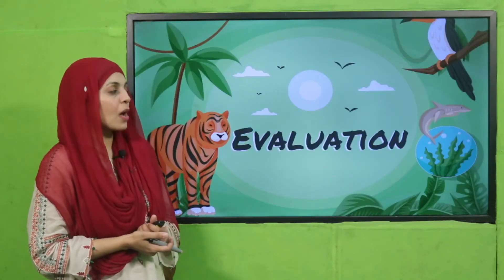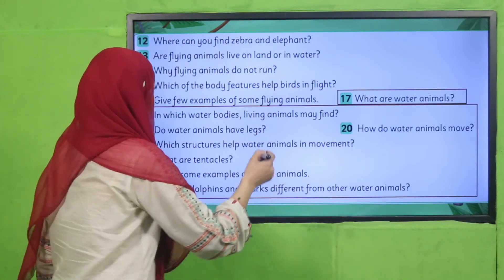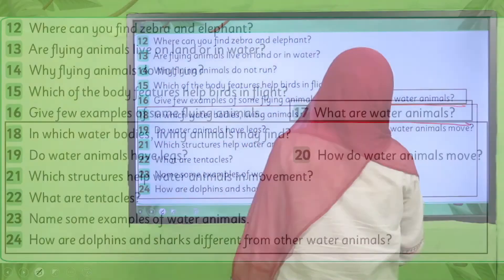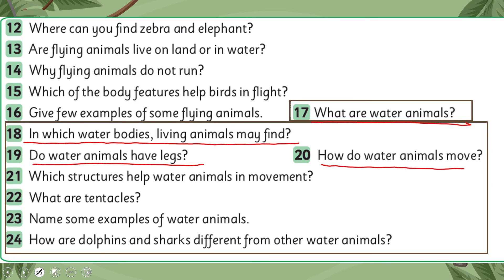Now is the time for evaluation. Pause the video after every question and then answer it. What are water animals? Animals which live inside the water. In which water bodies can water animals be found? Oceans, seas, rivers, etc. Do water animals have legs? No. How do water animals move? With the help of fins and tentacles. Which structures help water animals in movement? Fins and tentacles.